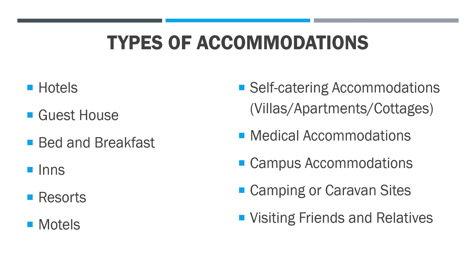Another type of accommodation is self-catering accommodation, which includes villas, apartments, cottages, or even condo units. Next is medical accommodations — these are types of accommodations found in hospitals, but they are not necessarily part of the hospitality industry. We also have campus accommodations, which are types of accommodations found inside or near a school campus. Next is camping and caravan sites, which are the usual sites that recreational vehicles visit or that those who would like to go camping use.